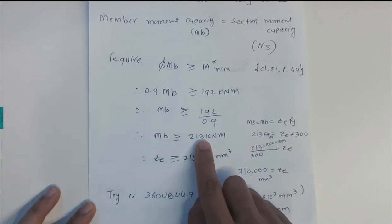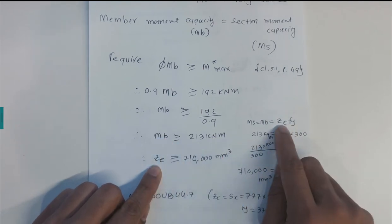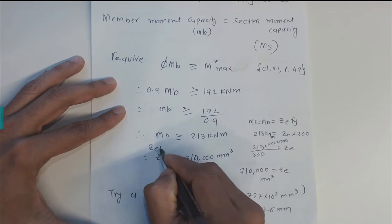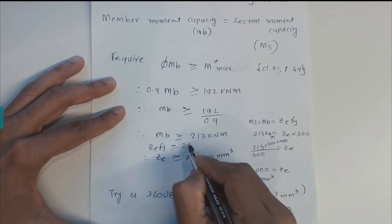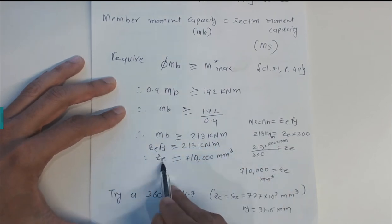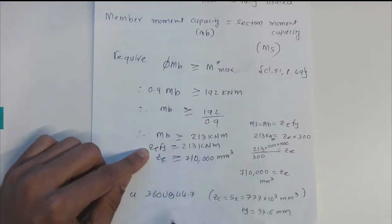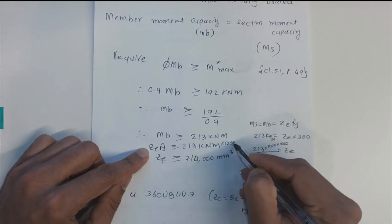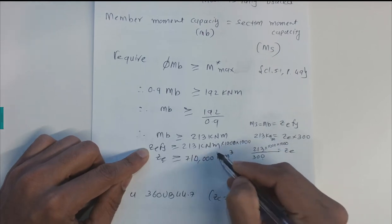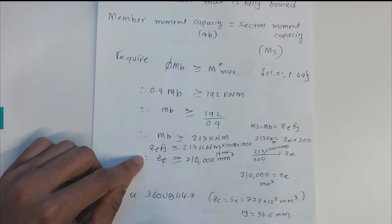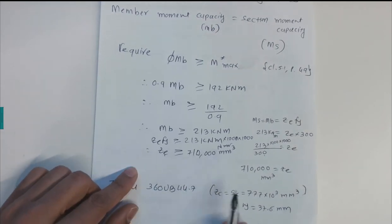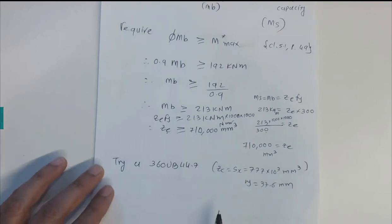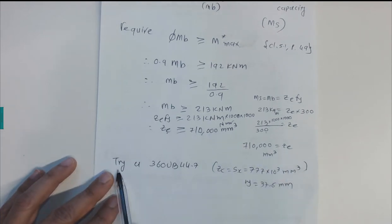From Mb, we have Mb = Ze × Fy. Setting Ze × Fy ≥ 213 kNm and rearranging, dividing by 300 MPa and converting units (multiplying by 10⁶ to get Newton-millimeters), we get Ze ≥ 710 × 10³ mm³.